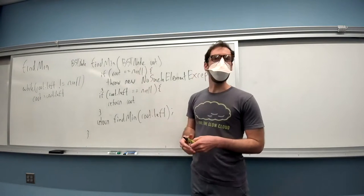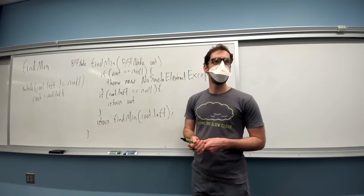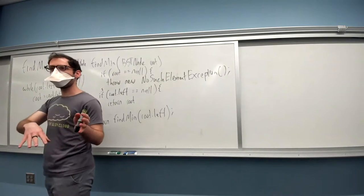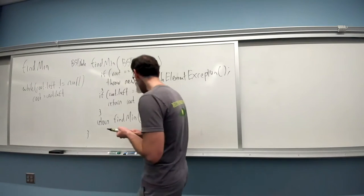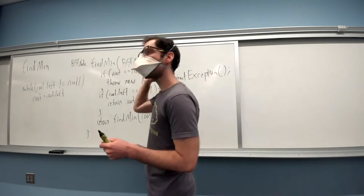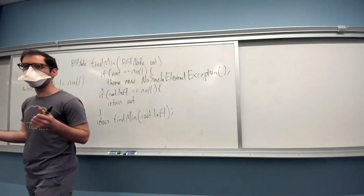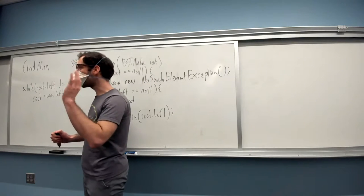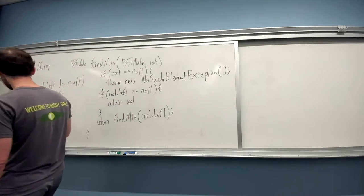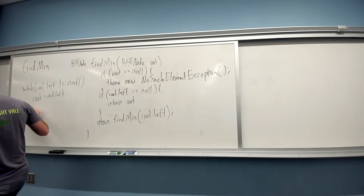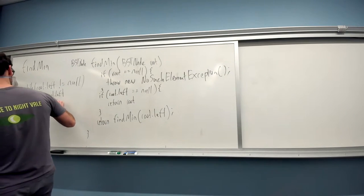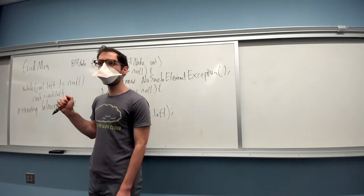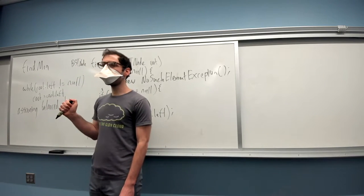How would it work if we wanted to find the maximum instead of the minimum? Just switch left to right — we'd go all the way right as far as we could instead of all the way left, and we'd find the maximum. A hash table could do find min in O(n) time.